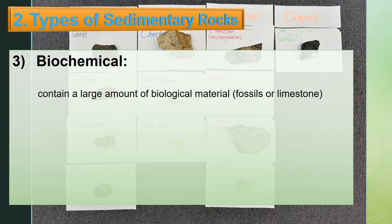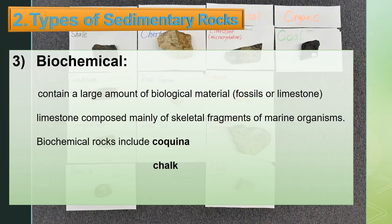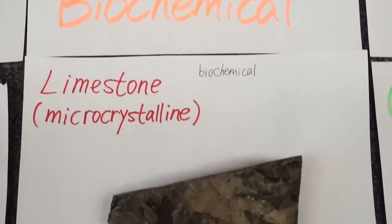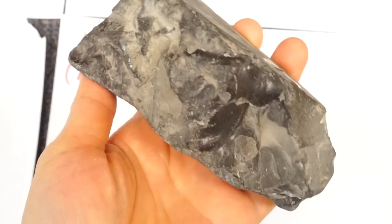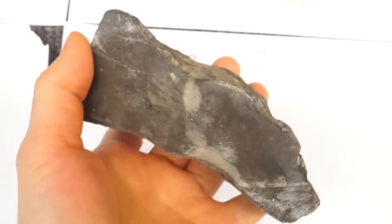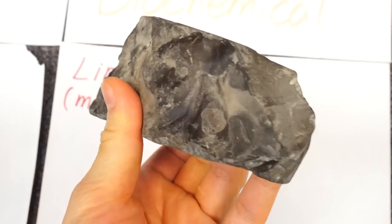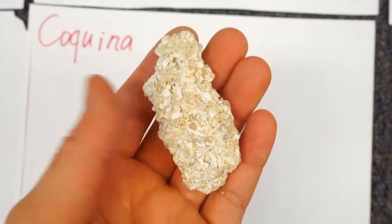Third, biochemical — contains a large amount of biological materials such as fossils or limestone. Limestone is composed mainly of skeletal fragments of marine organisms. Biochemical rocks include coquina, chert, and limestone. Examples include two kinds of limestone: coquina and chert. This is a sample of microcrystalline limestone — it is fine-grained and microcrystalline. An example of coquina shows visible shell fragments, loosely cemented.